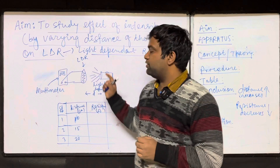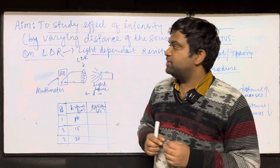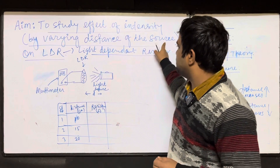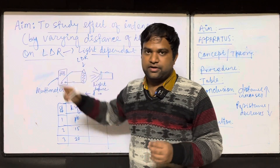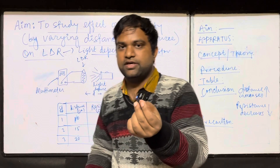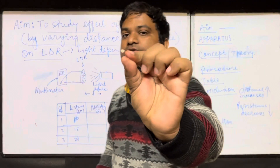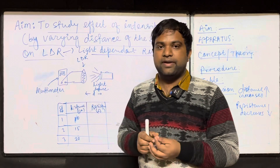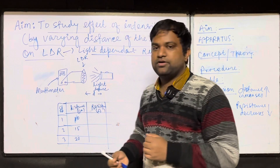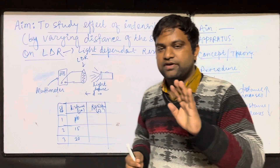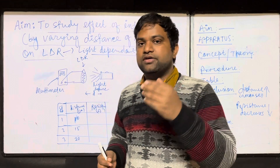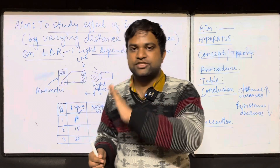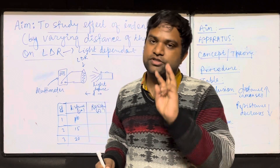Today in this video we will discuss one activity from your syllabus: to study the effect of intensity by varying the distance from the source on an LDR. This is an LDR. Many of you have asked how to write or maintain your notebook for the activities. You have 6 activities to do this year. If you see the syllabus, there are 2 sections — Section A and Section B — 3 activities each.